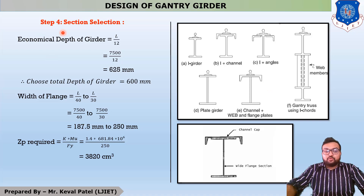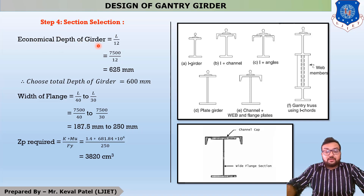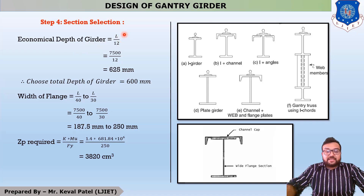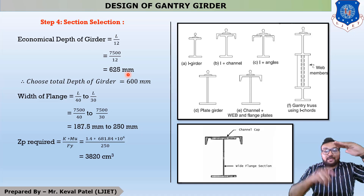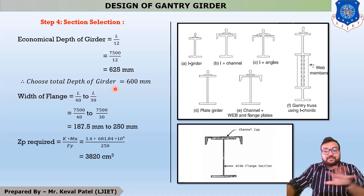Whenever we select a section, there are two fundamentals to consider. First is the economical depth of the girder, which is L divided by 12. Here, L is the span of the gantry girder, which is 7.5 meters. So it is 7500 divided by 12, which equals 625 mm. You have to select a section with a maximum depth of 625 mm — not more than 625 mm — because selecting more depth will result in buckling failure.